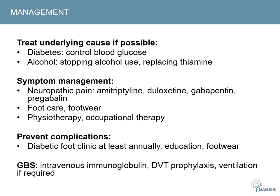Finally, how do we manage a patient with polyneuropathy? For all chronic symmetrical polyneuropathies, first you have to treat the underlying cause — whether that be controlling blood glucose levels in diabetes, eliminating toxic agents such as alcohol, stopping a particular medication, or replacing vitamins in vitamin deficiency.